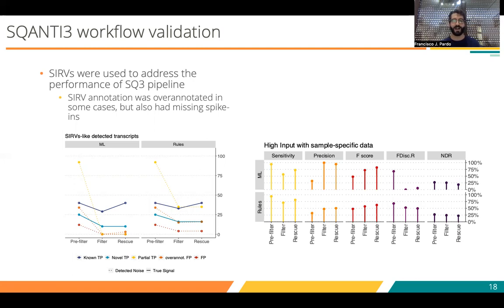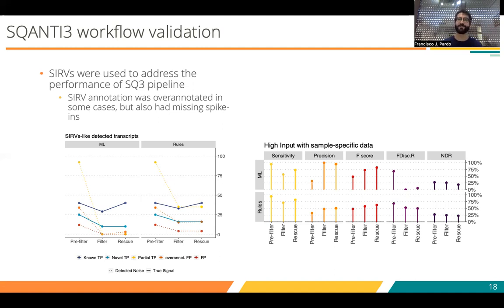Good news is that the filter removes incredibly well — especially for the machine learning — all those false positives: shorter versions of transcripts that were not actually in the sample. For the rules filter, this is sometimes more difficult because, as they are partial true positives, they will have coverage at the splice junction. In all cases, we are able to remove most of the false positives — all those spurious and false splice junctions are removed with the filtering.